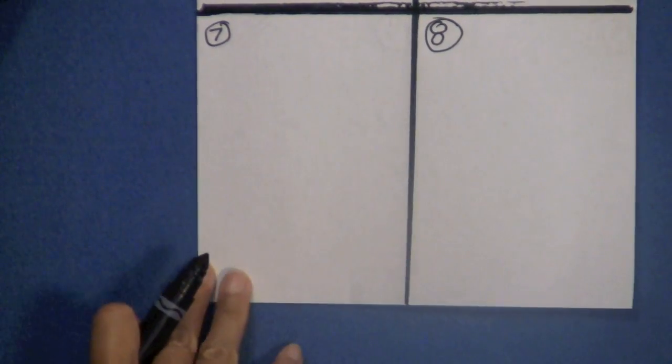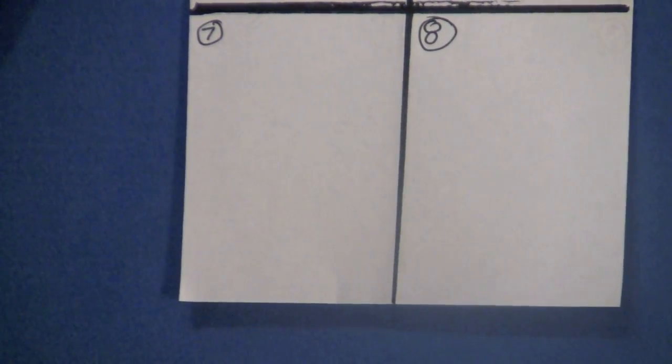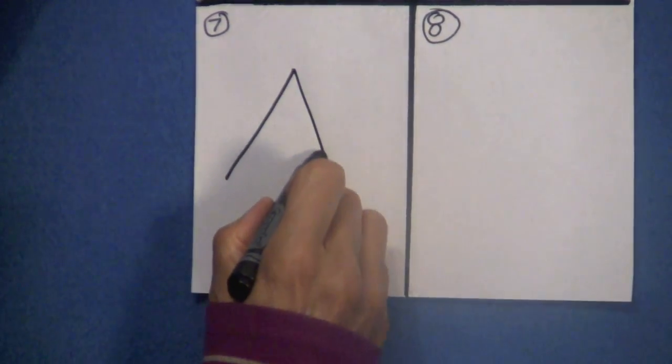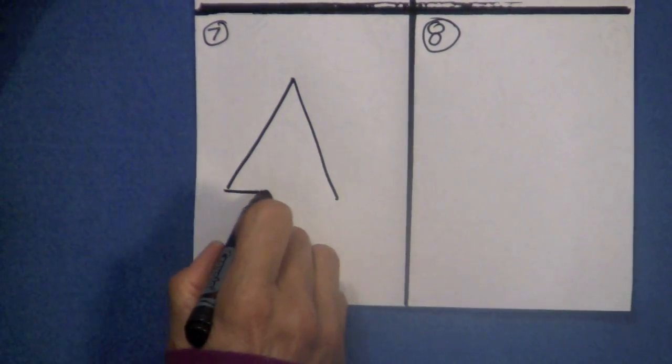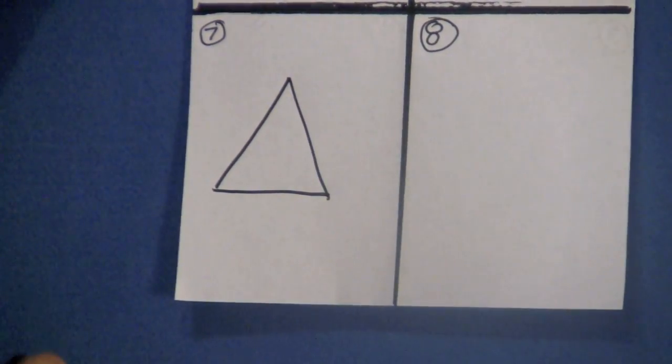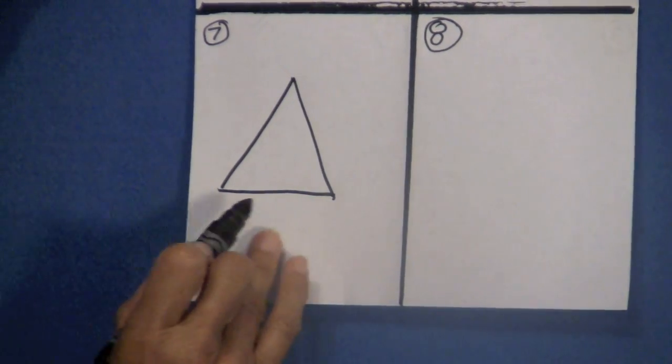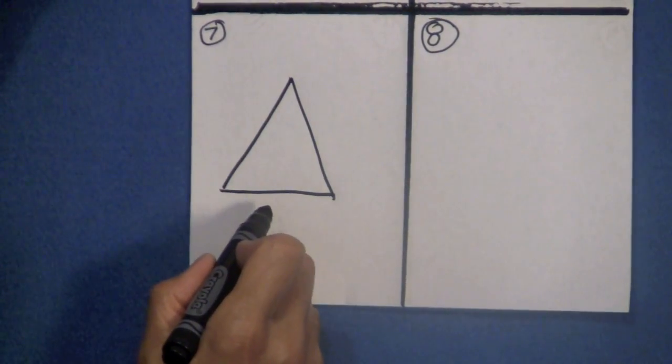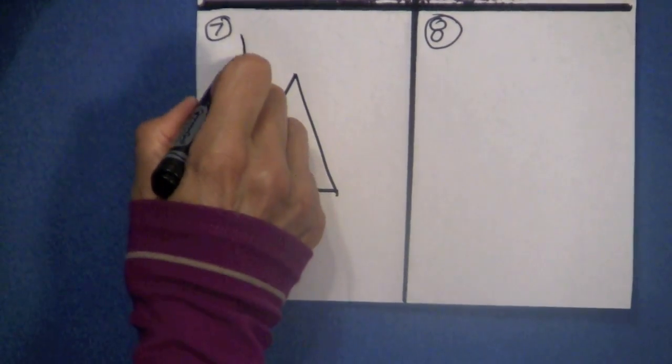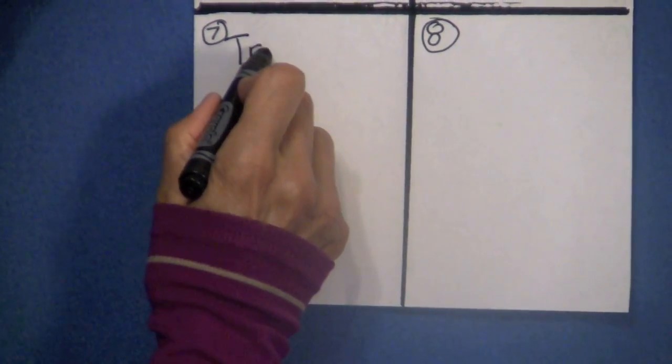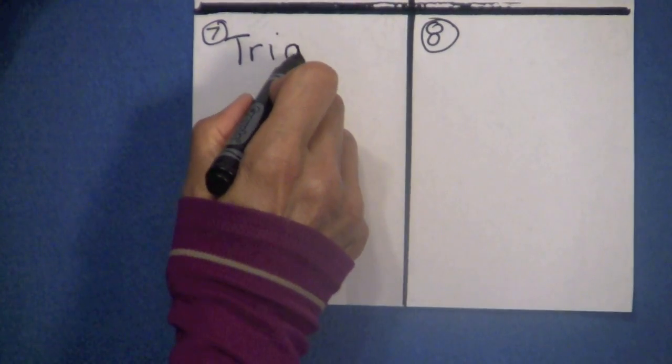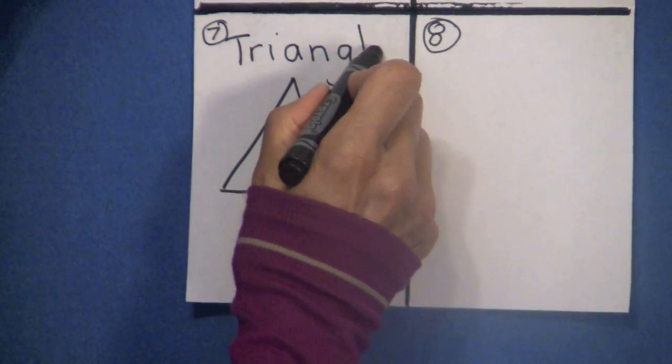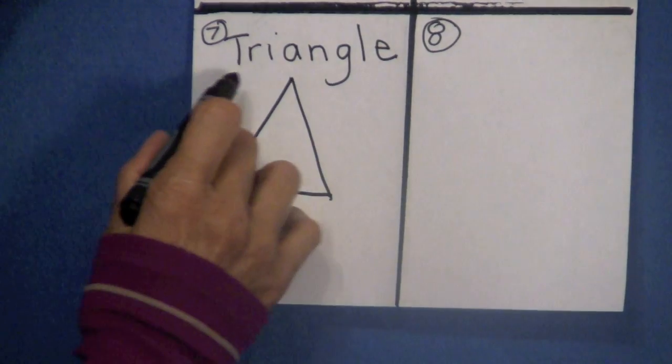Go to box number seven. I want you now to draw a triangle. A triangle has three sides, not necessarily equal, but we're going to draw a triangle here that the sides do look kind of equal here. How do we spell triangle? Capital T-R-I-A-N-G-L-E. Triangle.